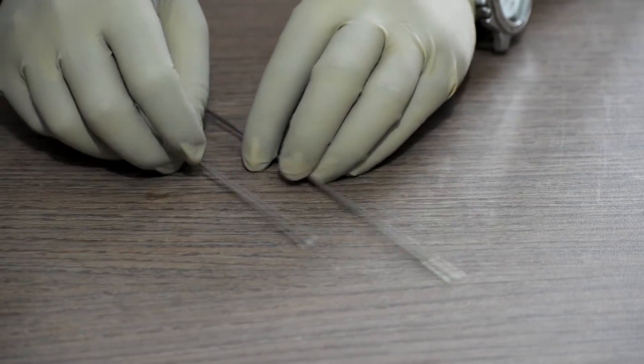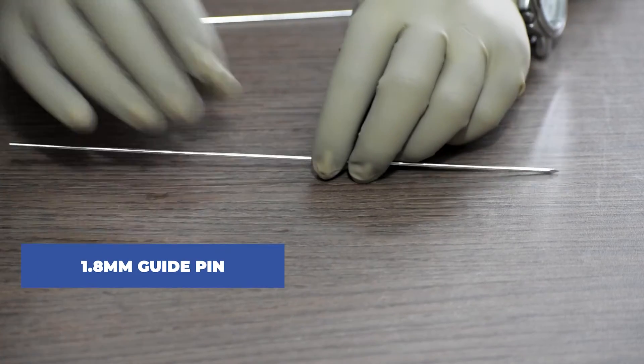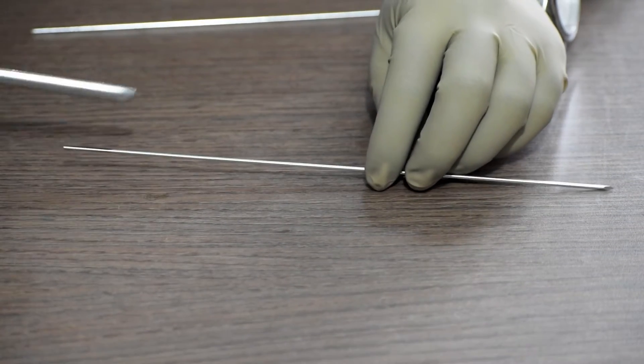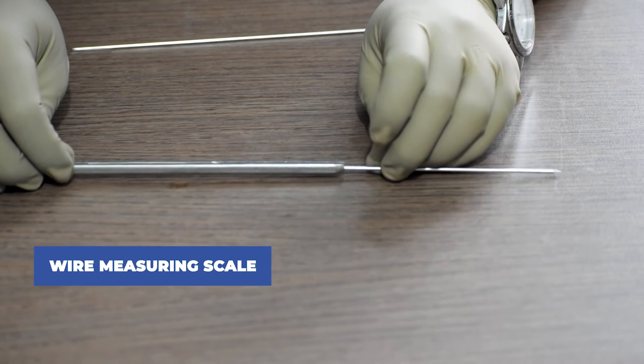First, we will fix a guide pin or guide wire, threaded or plain, depending upon surgeon's preference in the fracture site. Thereafter, we record the length with the help of a wire measuring scale.